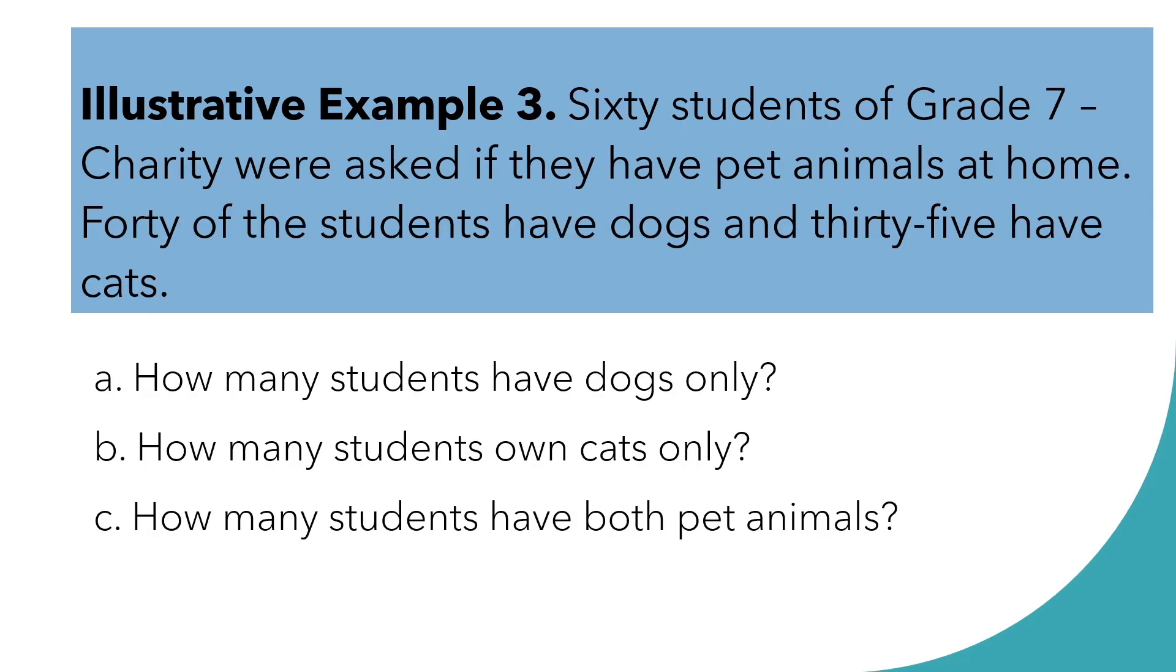Let us have illustrative example number 3. The problem is 60 students of grade 7 charity were asked if they have pet animals at home. 40 of the students have dogs and 35 have cats. You are to answer the following questions. For A, how many students have dogs only? For B, how many students own cats only? The last one is, how many students have both pet animals?